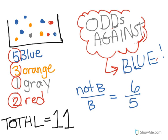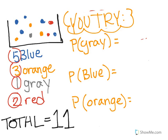Take a couple seconds — pause the video and try these three on your own: find the probability of picking a gray, the probability of picking a blue, and the probability of picking an orange. When you're ready, hit play again and the answers will be on the screen.